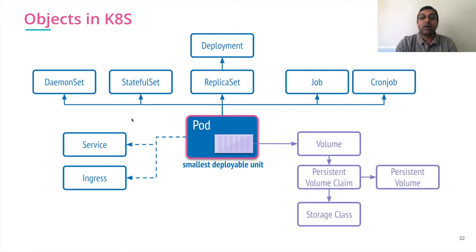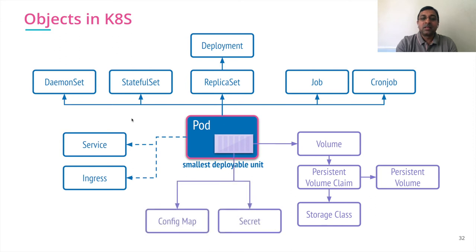To provide volumes or a storage ecosystem, there are object types called PersistentVolumeClaim, PersistentVolume, and StorageClass, which map as volumes on the container. To provide environment configuration values, there are objects called ConfigMap and Secrets.